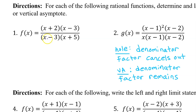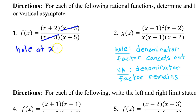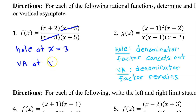We see the x minus 3 in the denominator, and because it cancels out with another factor in the numerator, this means we have a hole — a hole at x equals 3. Then we see the factor of x plus 5. This one does not cancel out with anything, so we have a vertical asymptote at x equals negative 5.